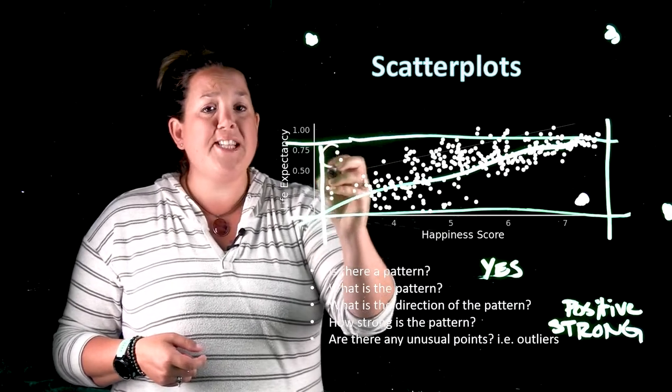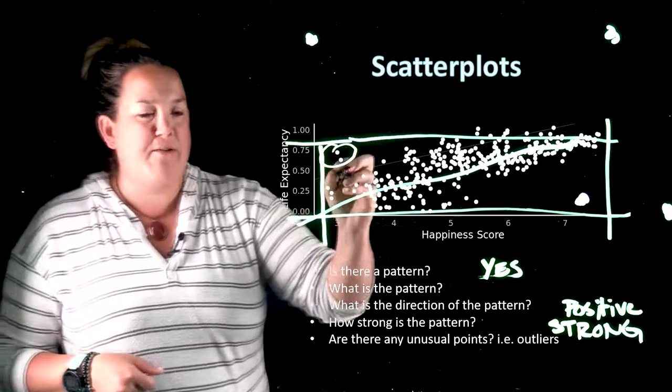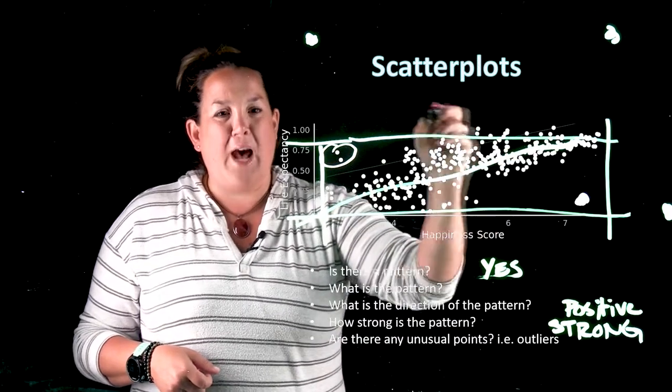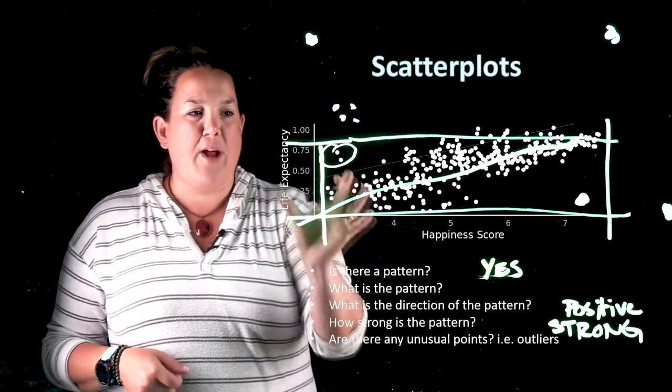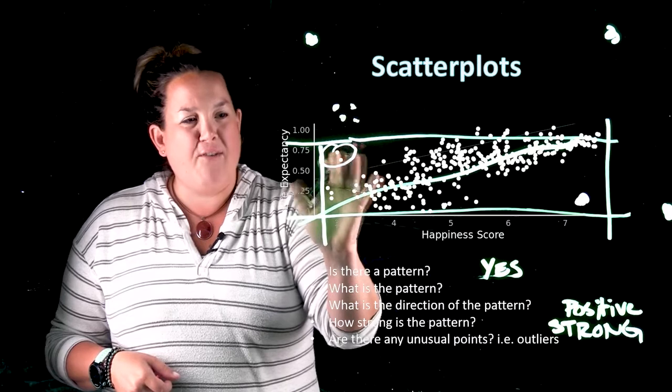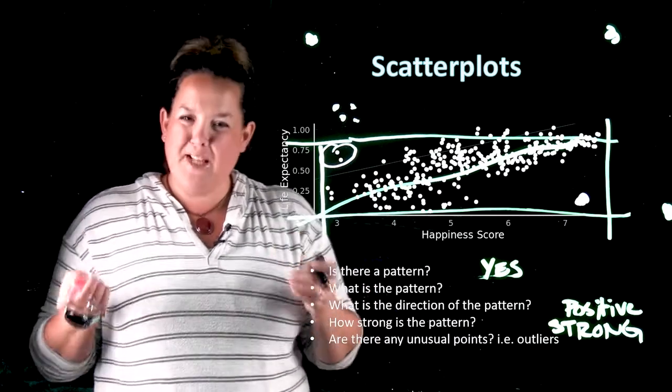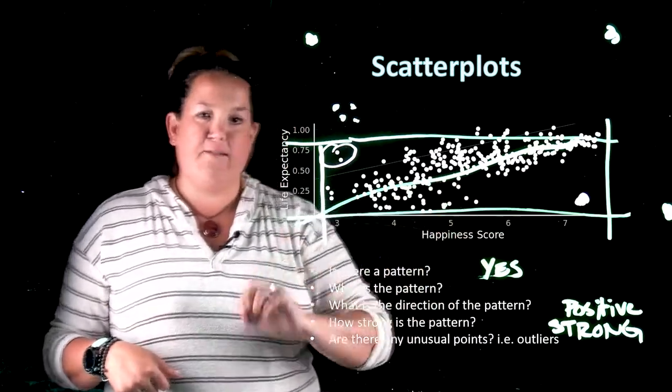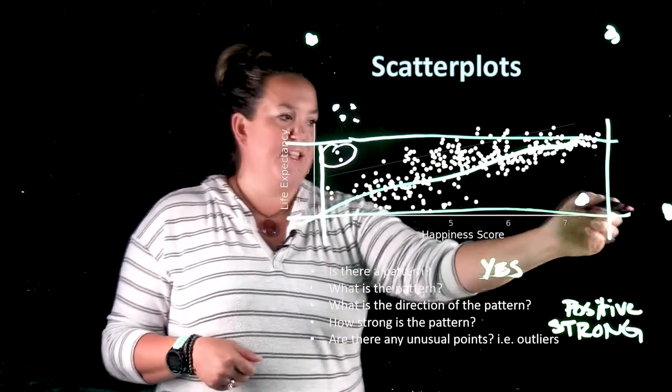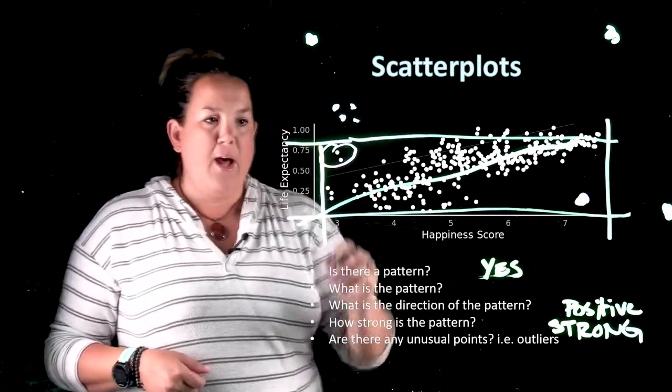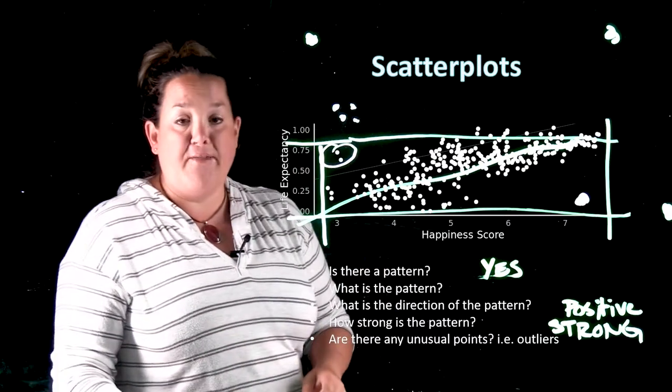Now these up here we could maybe consider those outliers because they stray from the pattern. But again it's subjective. I would say more if you had values that were in this area you would consider those outliers. So even though these are far away, you'll have to start justifying to yourself is that far enough away. This pokes you in the eye definitely. But these, because it's harder to tell, that would be a subjective judgment that you would have to decide for yourself.